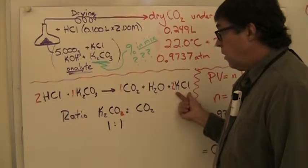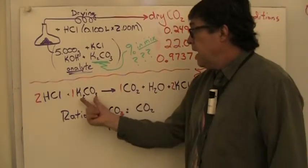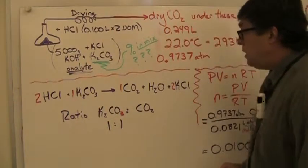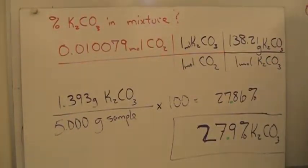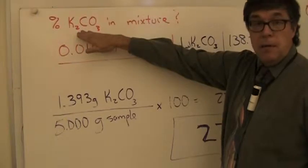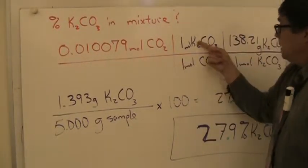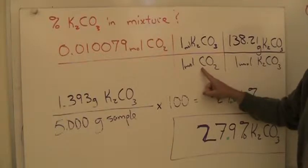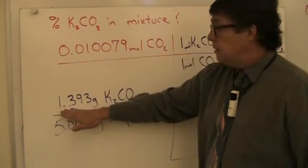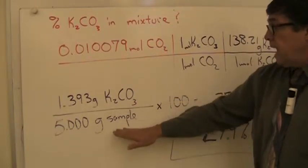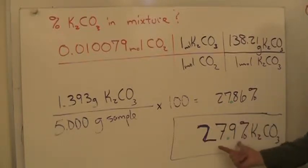The thing we're really interested in is for the carbon dioxide, how much carbonate was in the compound. They occur in a 1 to 1 ratio, so that allows us to solve for the percentage of potassium carbonate in the mixture. We have that number of moles of the gas, the ratio of potassium carbonate to carbon dioxide, and the molar mass of potassium carbonate, giving us a mass of 1.393 grams of the potassium carbonate out of the total sample for a percentage of 27.9%.